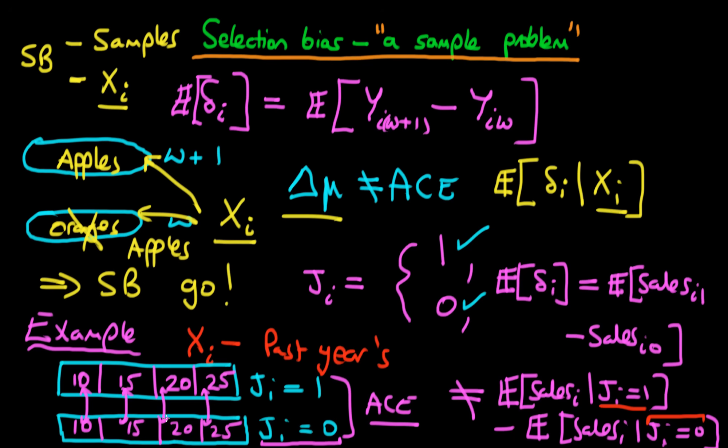So the idea is that we can remove selection bias by modifying our samples. That's going to lead us on to the discussion of matching — essentially what we're doing is matching different samples between the treated and untreated. It's also going to lead us to talk about propensity scores in the next few videos.